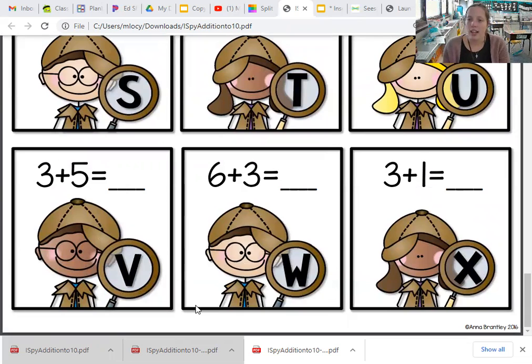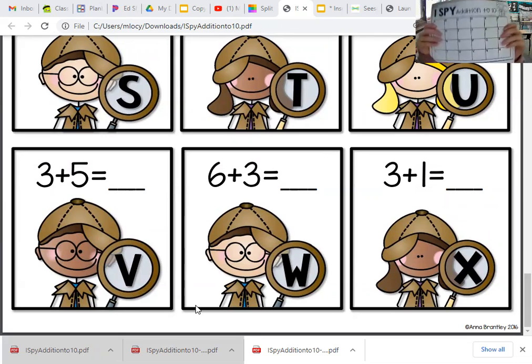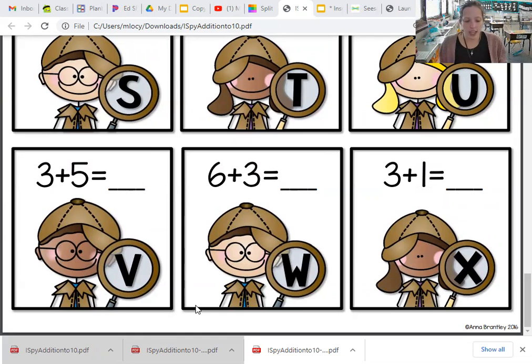And you're going to write your answer on that piece of paper that looks like this. You're going to write your answer in each box correlating to the letter it gives you. So like for X, 3 plus 1, and we just said that was 4, so you're going to write the number 4 in the X box.